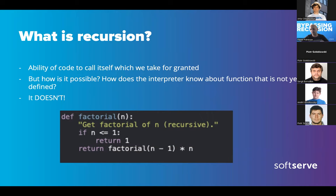A very simple and common example is the factorial function. We need to reach down for something we only know partially - we ask factorial what it is for five, and the function says 'I don't know, ask me for four.' Then four asks for three, and finally if it's one, it knows the answer. That's how it works, and for some sorts of problems recursion becomes a clean, easy, and nice way to read the code.